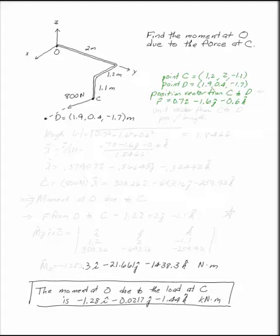Now we can't use that because it does not have length 1. We need the unit vector from C to D. That's where you take the position vector and divide by its length. So what is the length of the position vector?